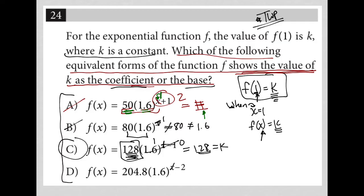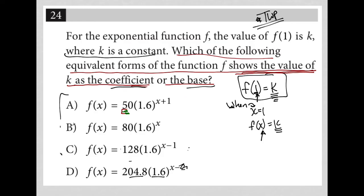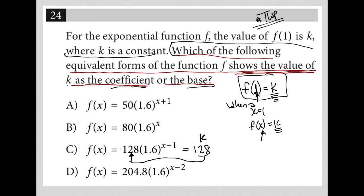Let's try D: when I put a 1 in for x, I get a negative 1 exponent. 1.6 to the negative first power times 204.8 is not going to give me either of the listed values, so D is eliminated. To summarize: choice C is the only answer choice that provided a k value — because k is whatever you get when you put 1 in for x — that was also a coefficient in the function itself. That's exactly what the question requires for the correct answer.